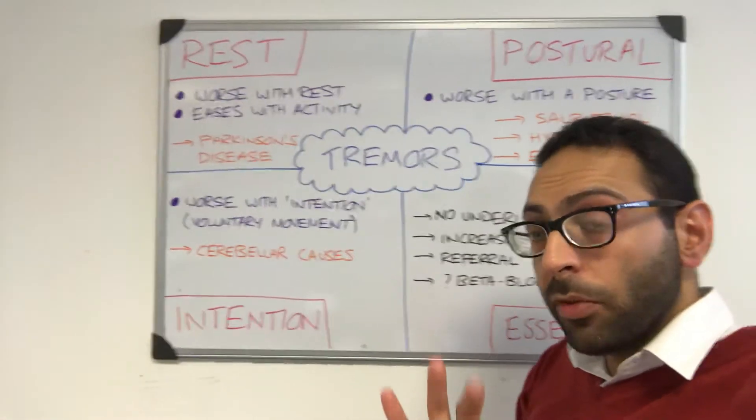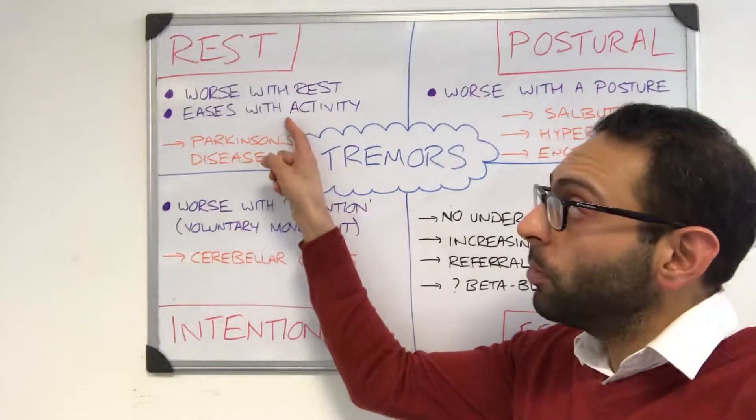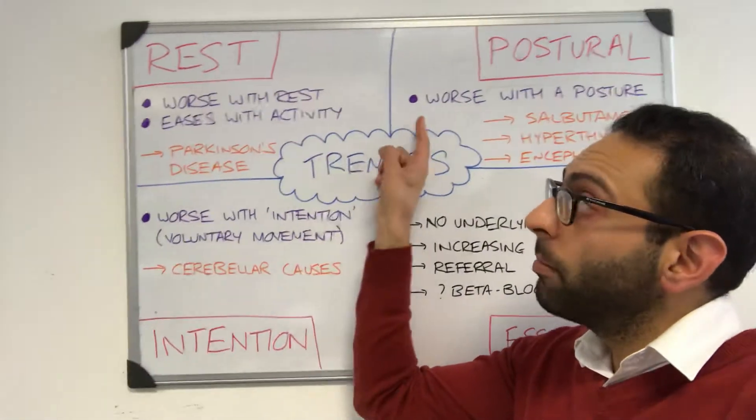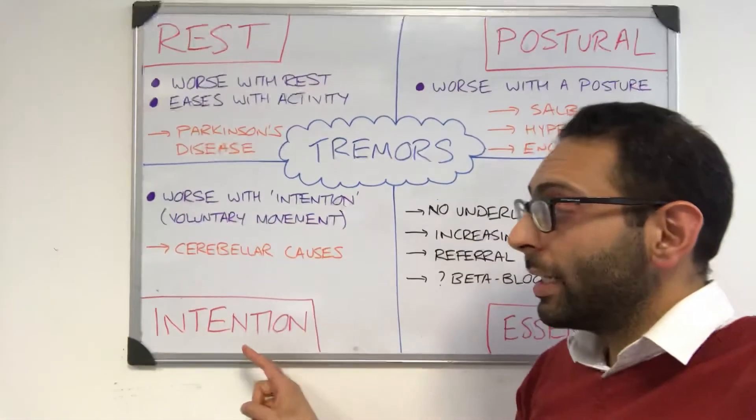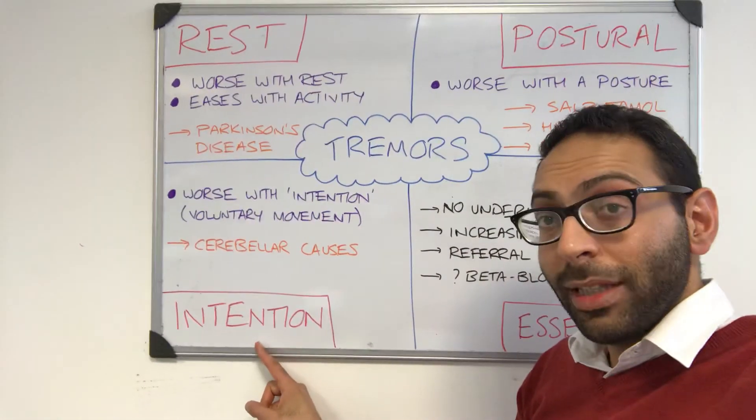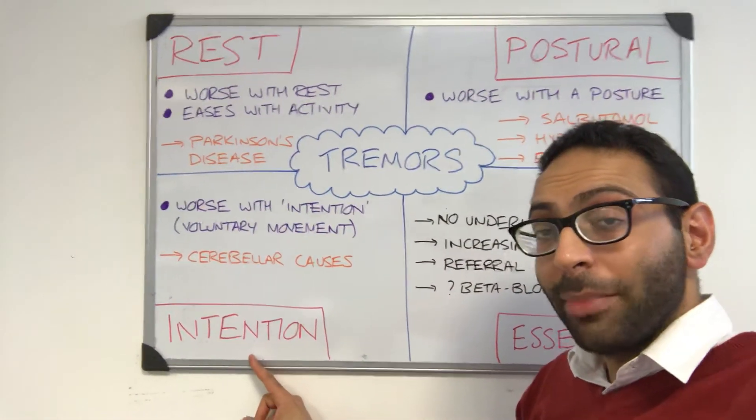So three main types of tremor: rest tremor worse with rest, postural tremor worse with posture, intention tremor worse with intention. Hope this helps.